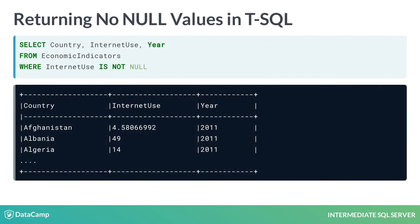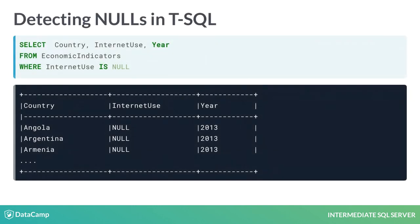To check if there is a missing value in a column, you can use isNotNull. For example, to return all rows without any missing values in Internet Use, you can add the clause where Internet Use isNotNull, as shown here on the last line of the query. To return all the rows where Internet Use isNull, use the where Internet Use isNull statement, as shown here in this query.